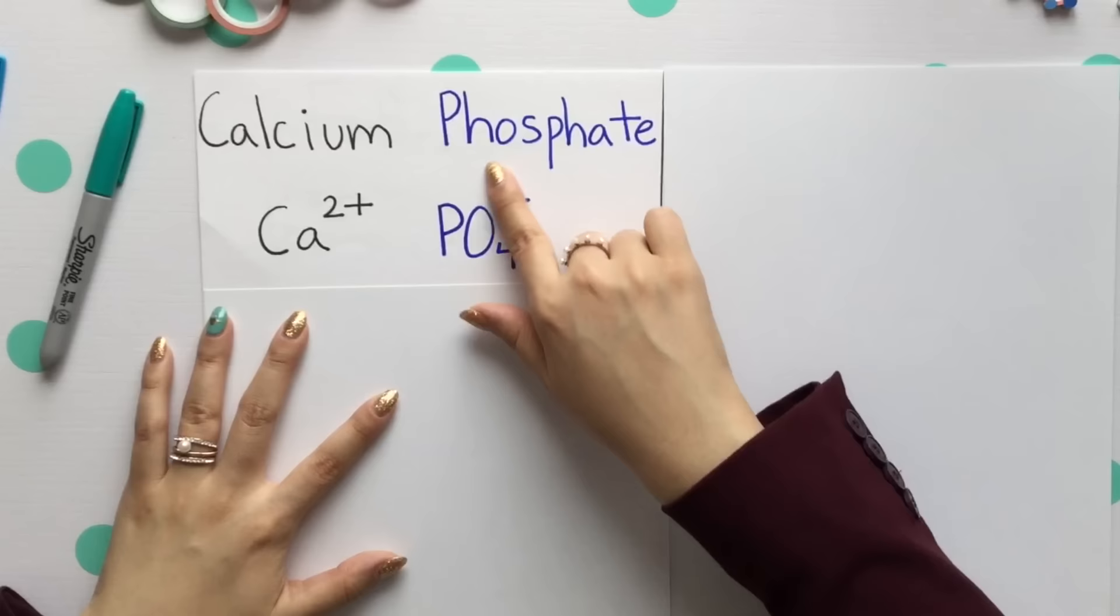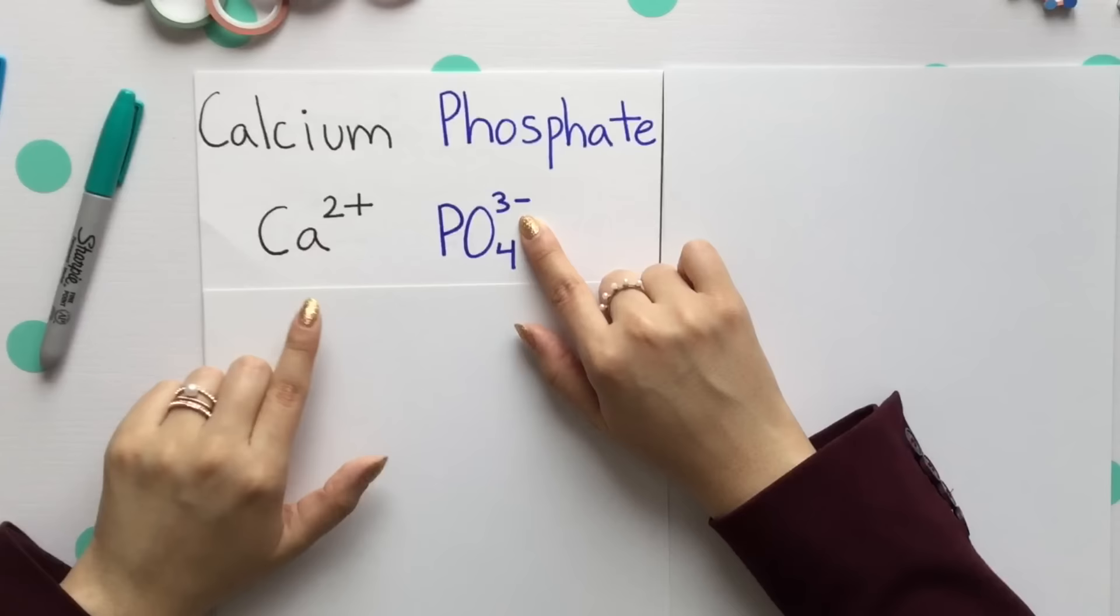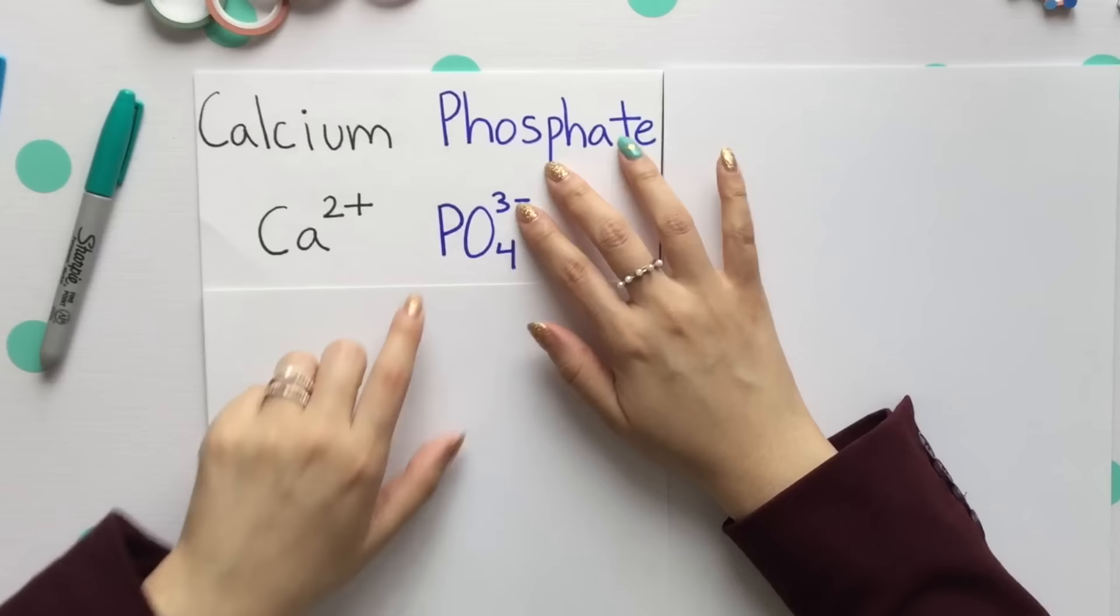Calcium is the name of our metal, and phosphate is our type of polyatomic atom. Polyatomic atoms do have specific charges, which is something you have to know. Calcium has a 2+ charge, phosphate has a 3- charge.